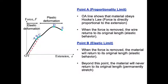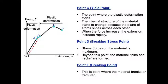Point B, elastic limit. When the force is removed, the material will return to its original position. But, beyond this point, the material will never return to its original position. It was permanently stretched. Point C is yield point. This is the point where plastic deformation starts. The internal structure of the material starts to change because the planes of atoms slide across each other. When the force increases, the extension increases rapidly. We can see that in this line, C to D, the extension increases rapidly as the force increases.